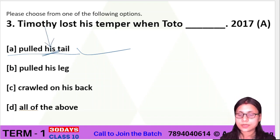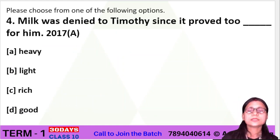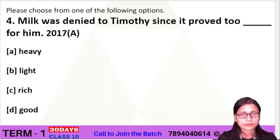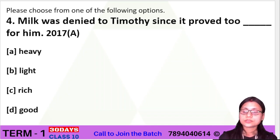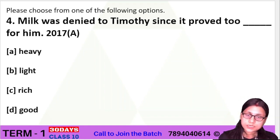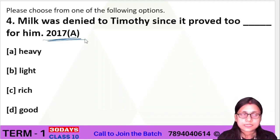Question number 4: 'Milk was denied to Timothy since it proved two dash for him.' When Timothy was small, he was given milk, but later milk was denied to him. This is a very important question that appeared in the 2017 annual examination.